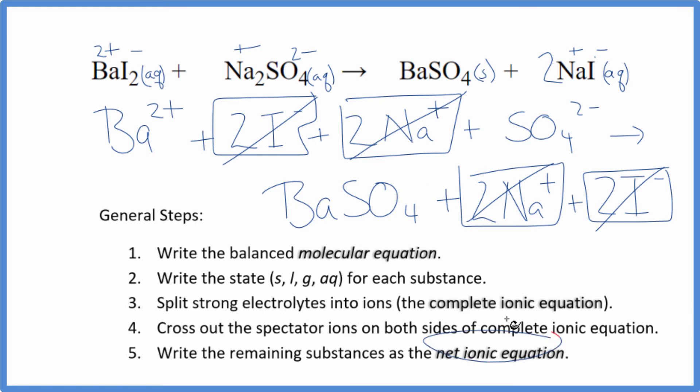What's left? That's the net ionic equation for BaI2 plus Na2SO4. I'll clean it up, write the states. We'll have our net ionic equation.